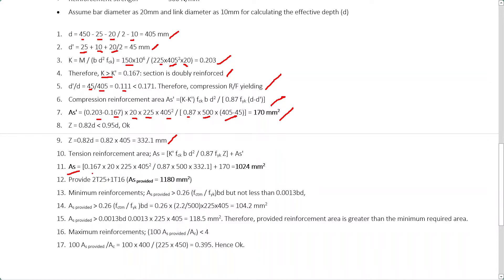Substituting into the tension reinforcement equation: K' = 0.167, FCK = 20, B = 225mm, D = 405mm, 0.87 × FYK = 0.87 × 500, Z = 332.1mm, and A' (compression reinforcement area) = 170mm². We obtain the required tension reinforcement area. For the bottom reinforcement, providing two 25mm bars and one 16mm bar gives a total area of 1180mm², which exceeds the required amount — so this is acceptable.